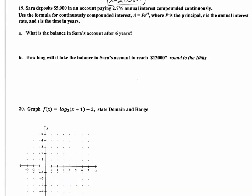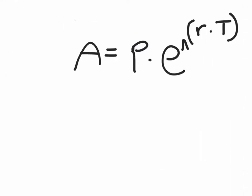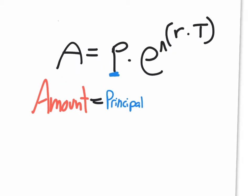Number 19. Sarah deposits five thousand dollars into an account paying 2.7 percent annual interest compounded continuously. Use the formula for continuously compounded interest: A equals Pert — P times e to the rt. The formula: A is the amount, P is the principal, which means the amount of money you're actually starting with.